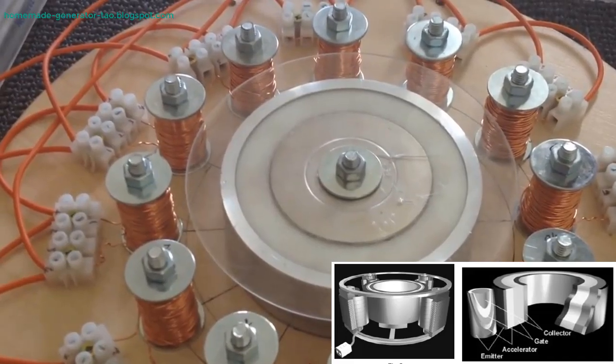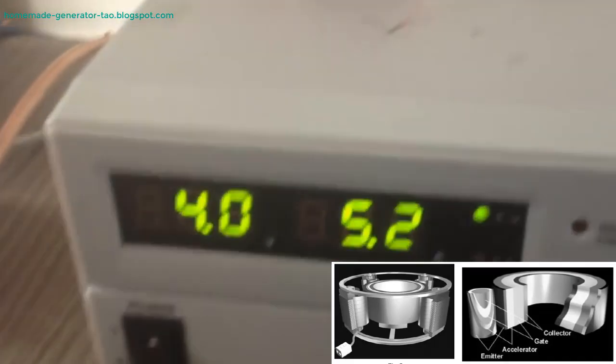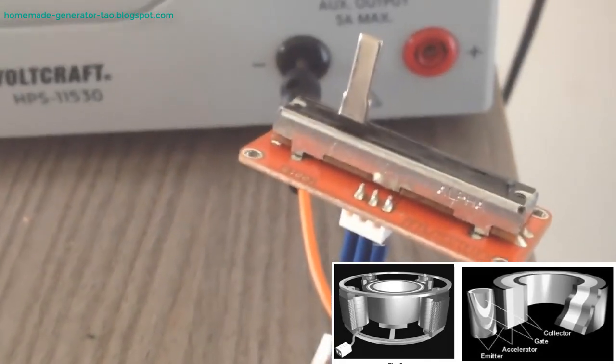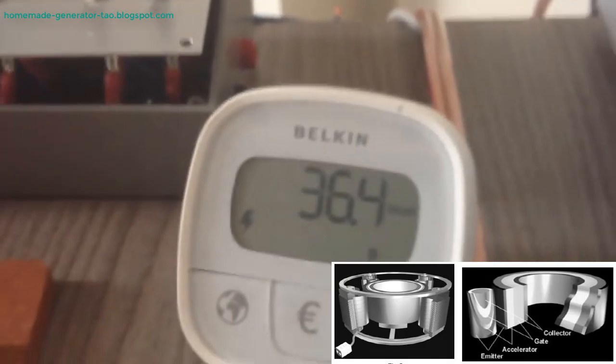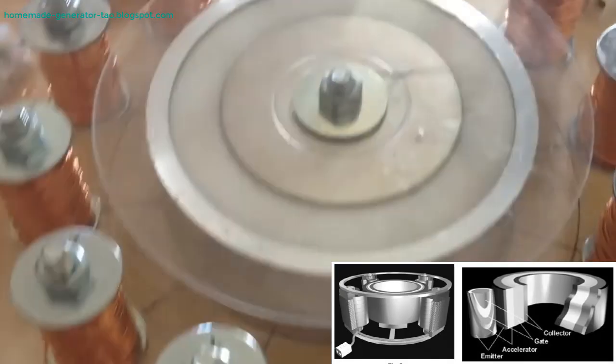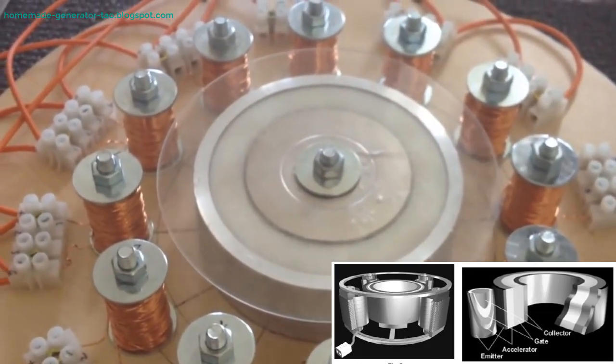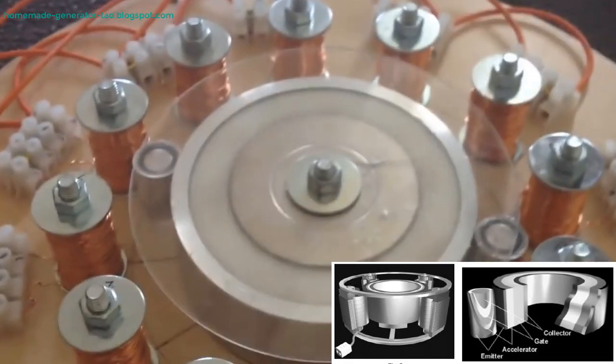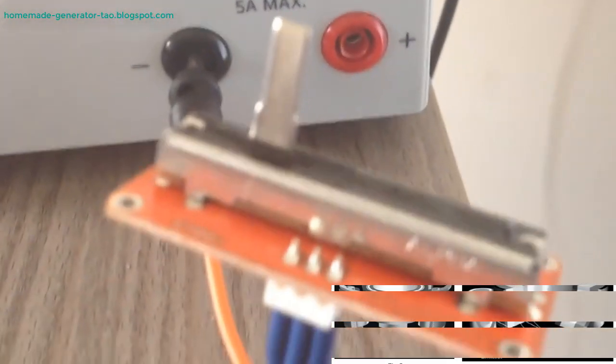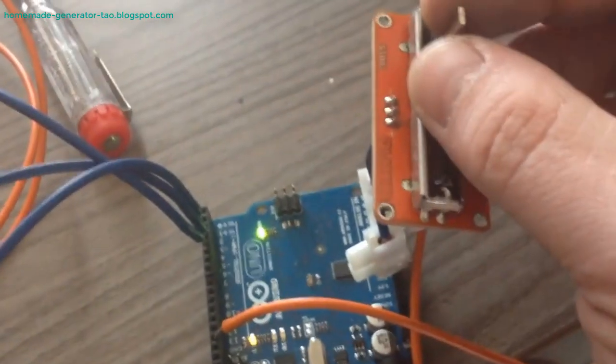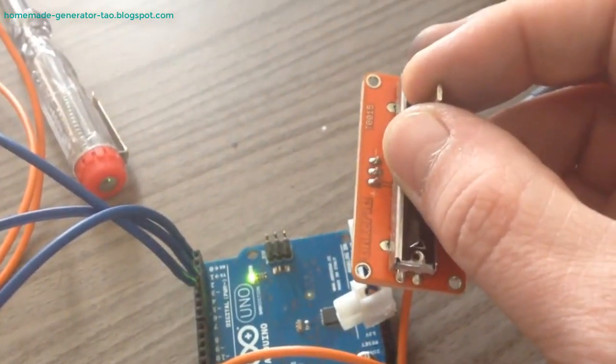The Searle Effect refers to the phenomenon observed when the SEG operates, where it purportedly generates electricity while simultaneously producing a strong self-sustaining magnetic field. The key to this effect lies in the configuration of the SEG, which consists of a series of concentric rings and rollers made from the specially manufactured permanent magnets. As these rollers move around the rings, they create a dynamic magnetic field that induces an electromotive force.